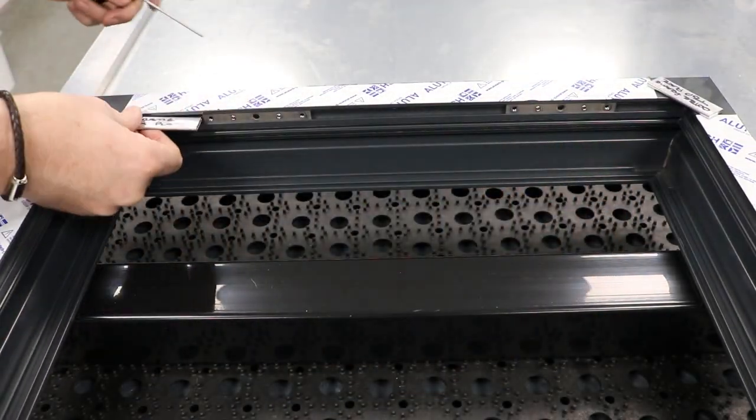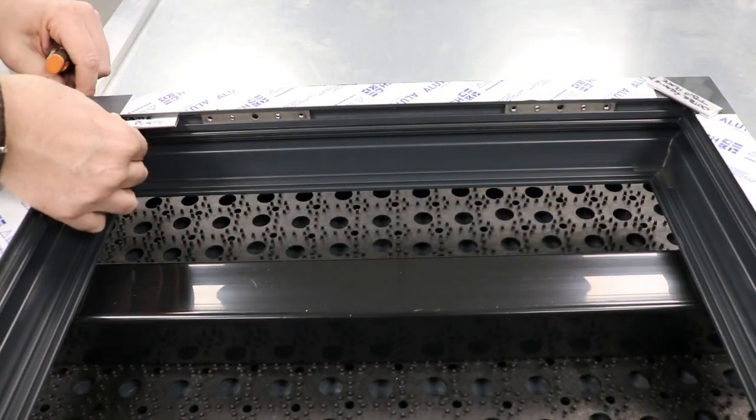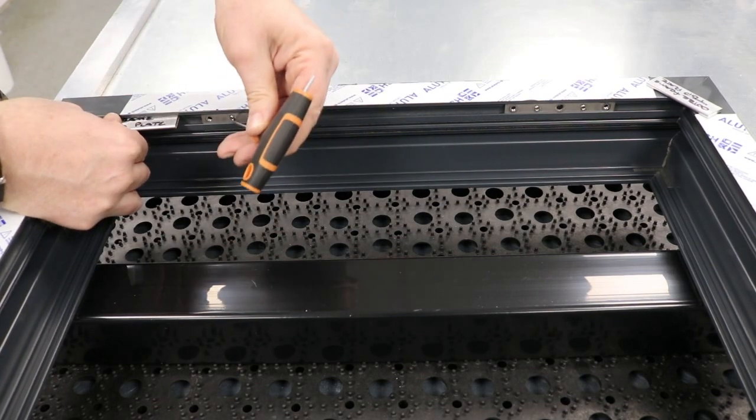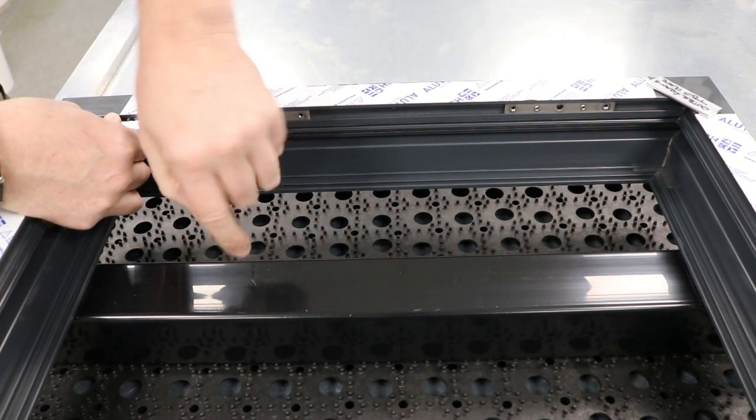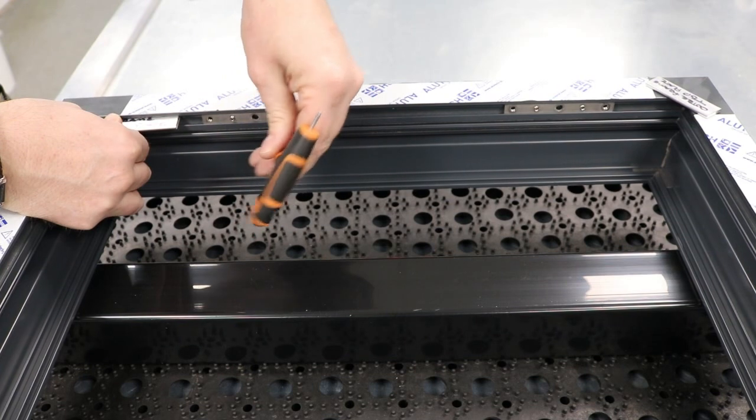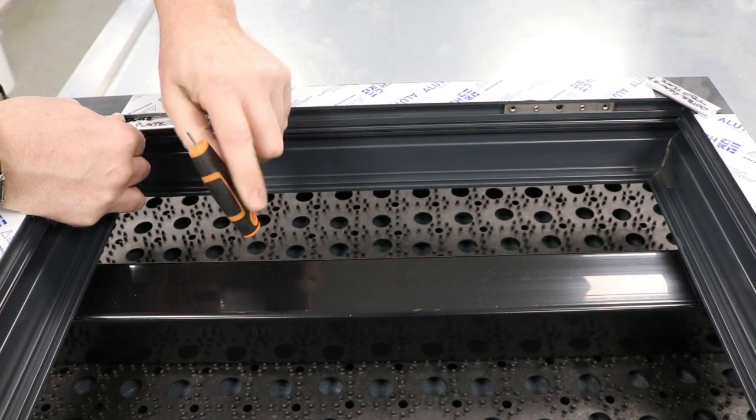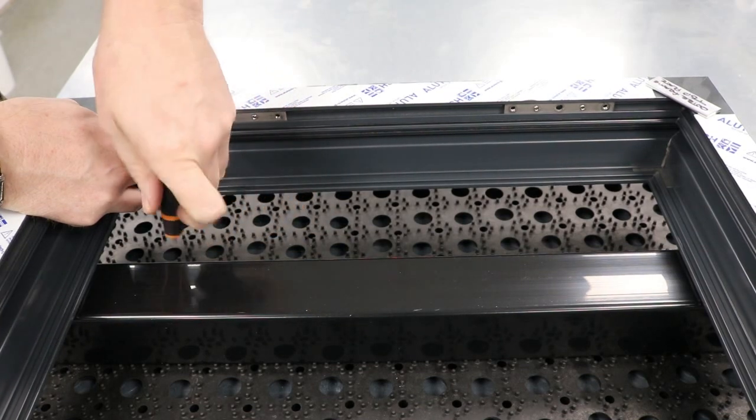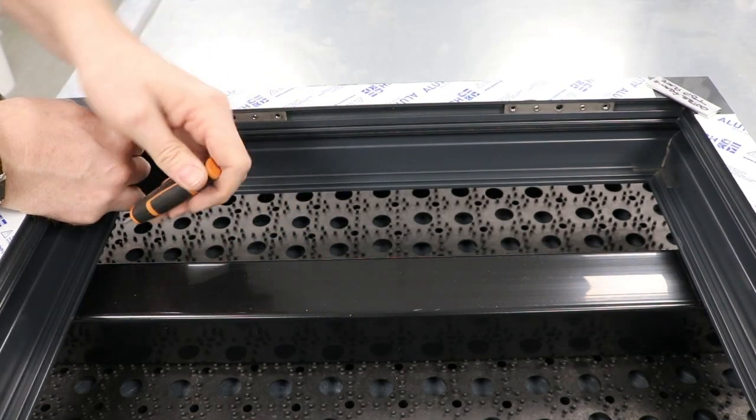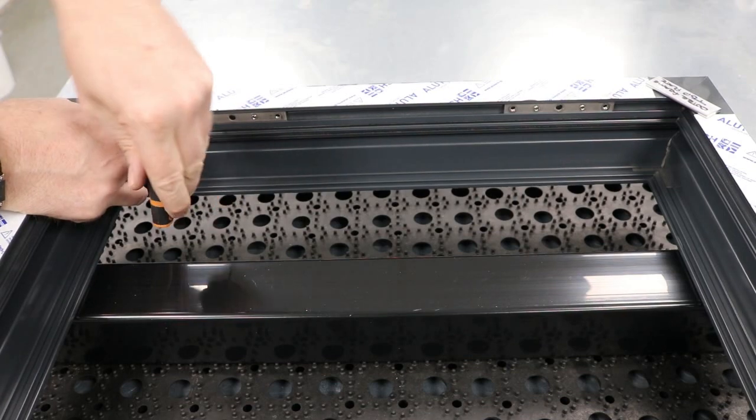And then do the same for the bottom. Just insert my little jig piece, slide it up to that plate, and then tighten it back up. So that's set the position for my top hinge and my bottom hinge.